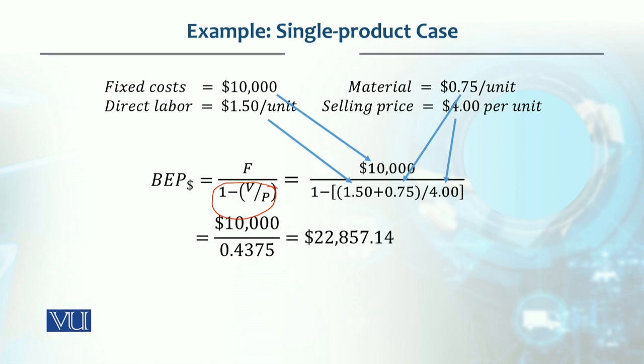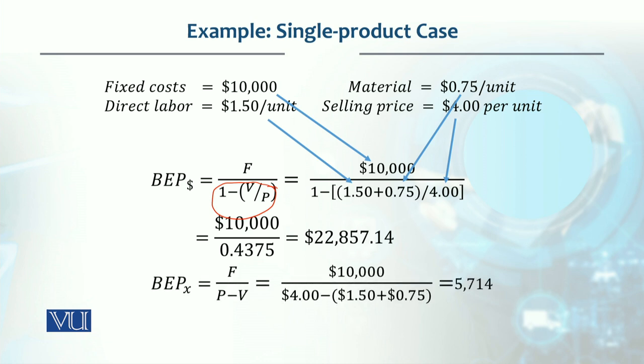Similarly, if we calculate in units, it is F divided by (P minus V), where (P minus V) is the contribution margin. Dividing by this gives 5,714 units. If you produce this many units, you achieve break-even — meaning a no profit, no loss situation.